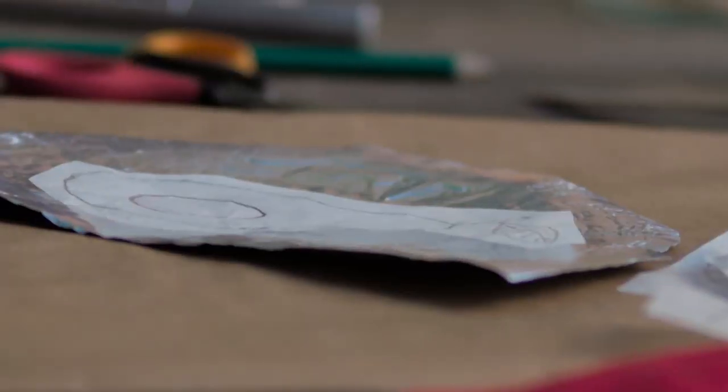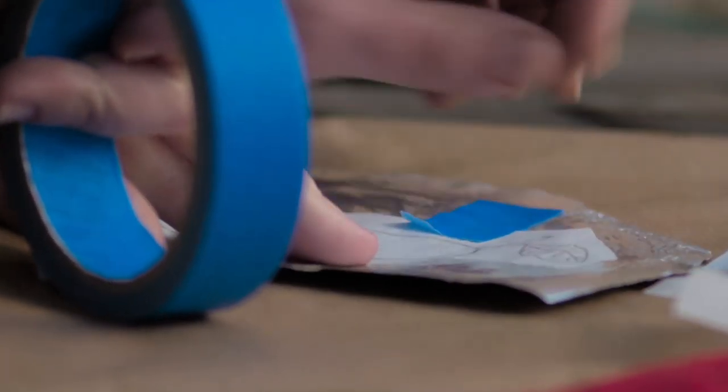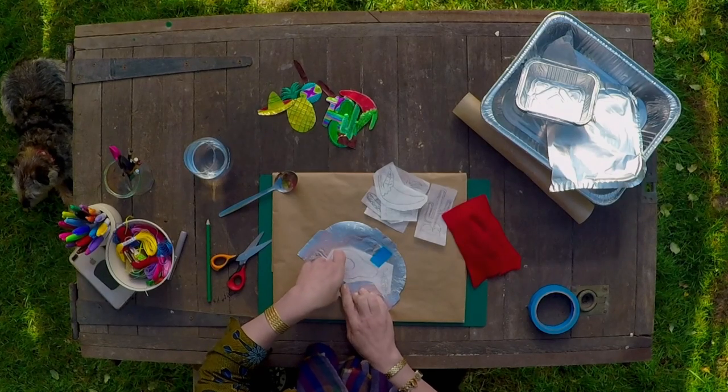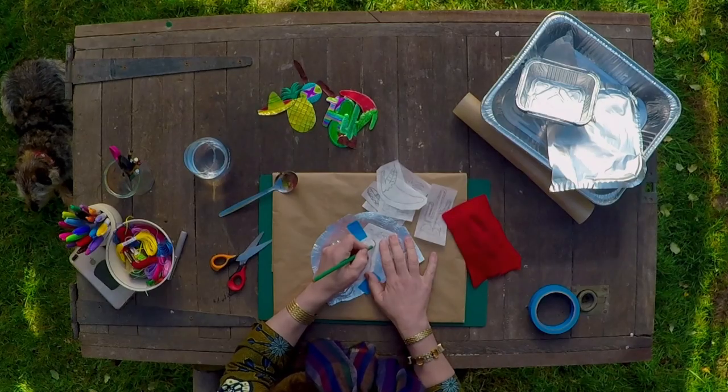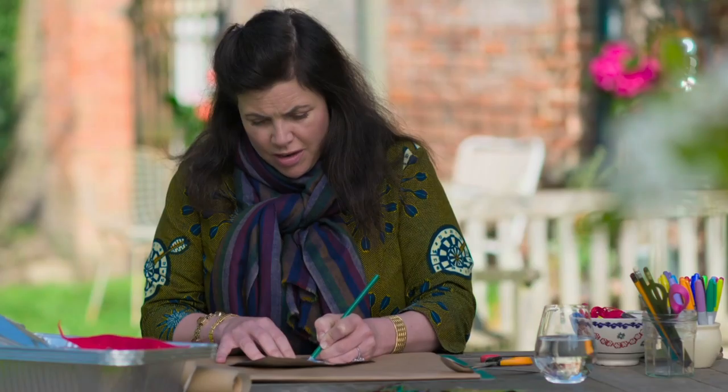Tape your template onto your chosen piece of metal, then using a soft pencil, trace over your design's outline to create a fine embossed image on the metal. So you just go round your little template like that. Can you see on the back, it's starting to form the avocado shape.